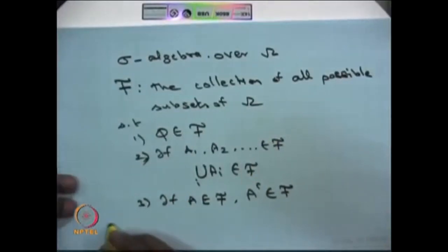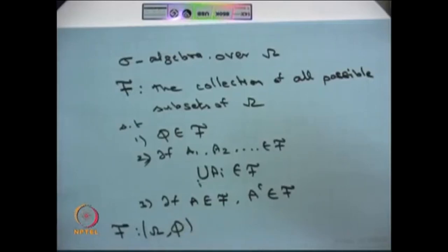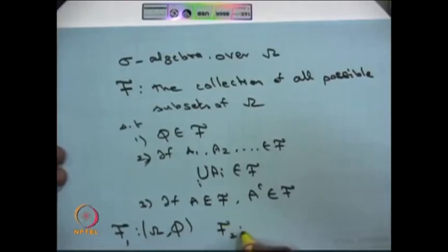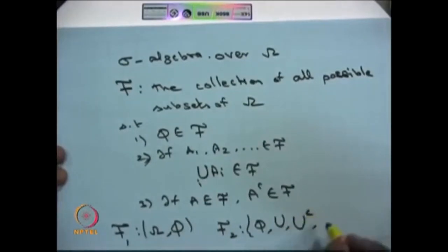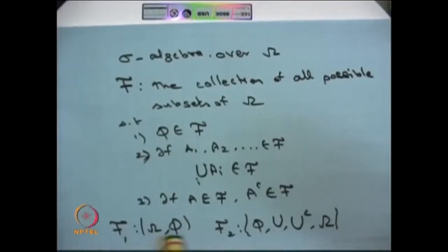You can create a trivial sigma algebra F that contains only the empty set and the whole set omega — this is the default sigma algebra. You can also create other sigma algebras by taking a subset U consisting of a few elements of omega, and including U, its complement, the empty set, and omega. Like that, you can keep creating different sigma algebras over omega.